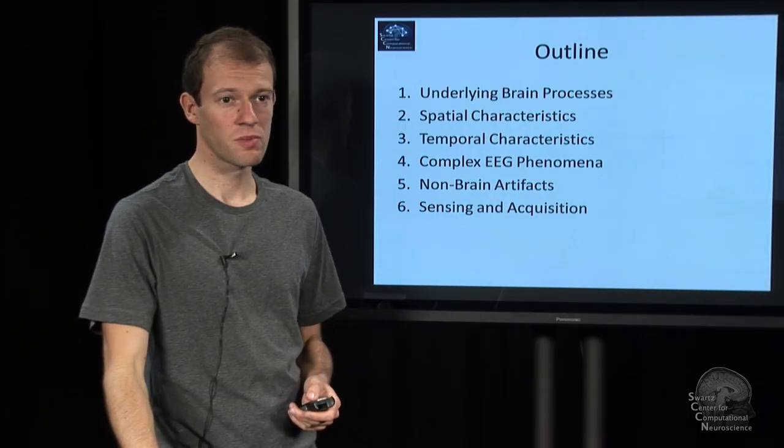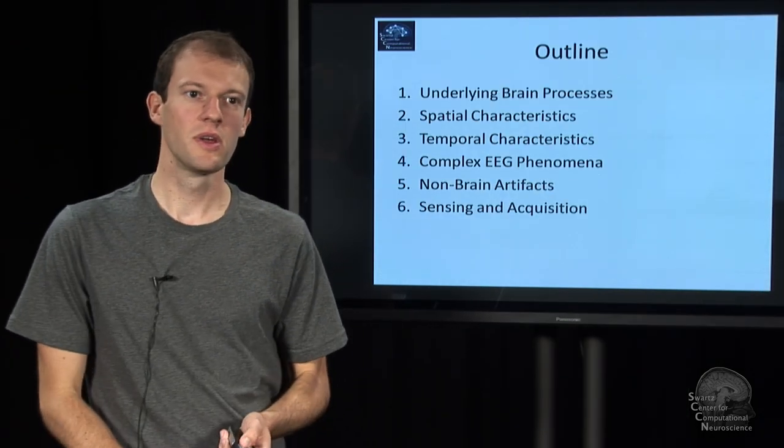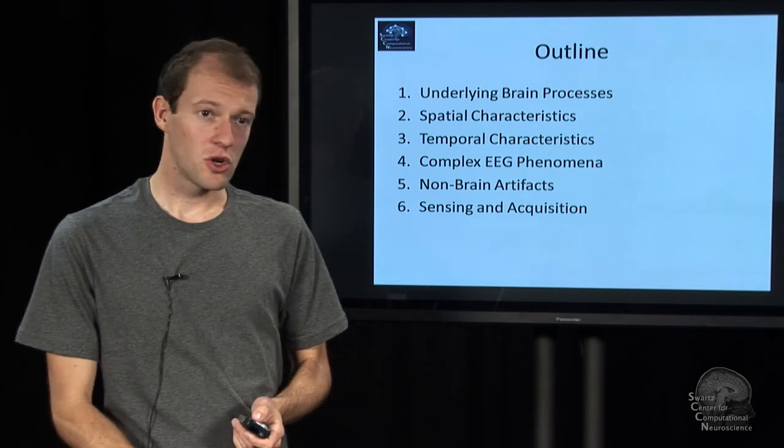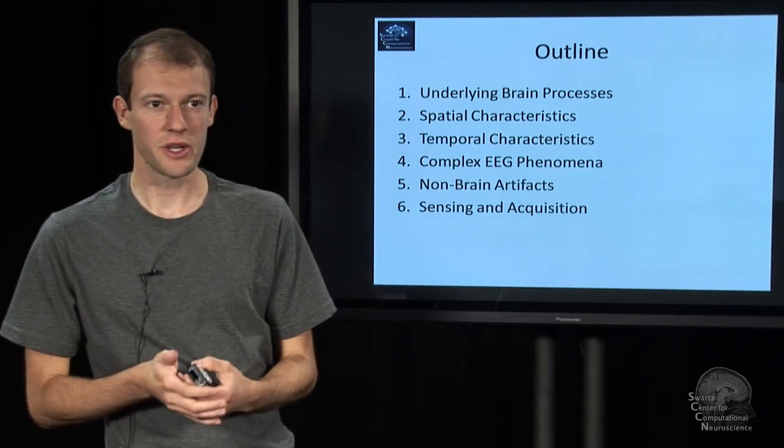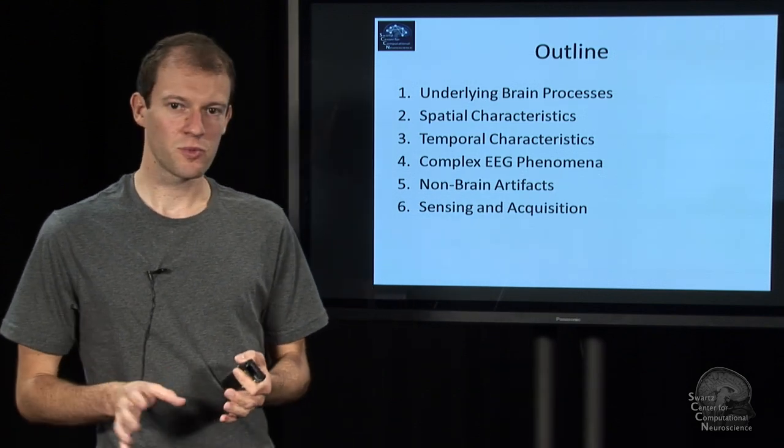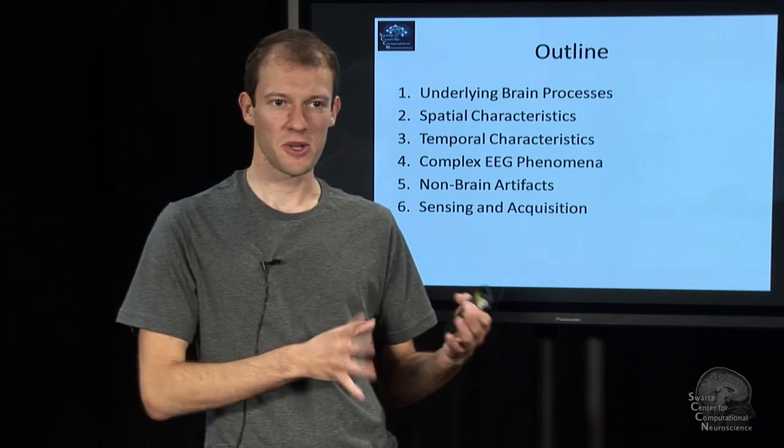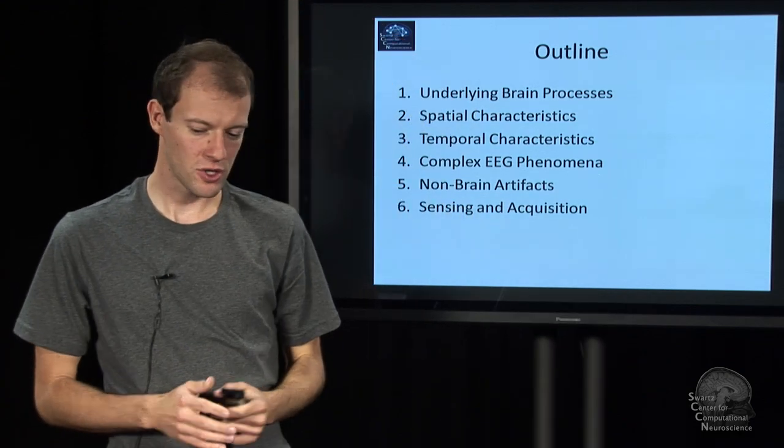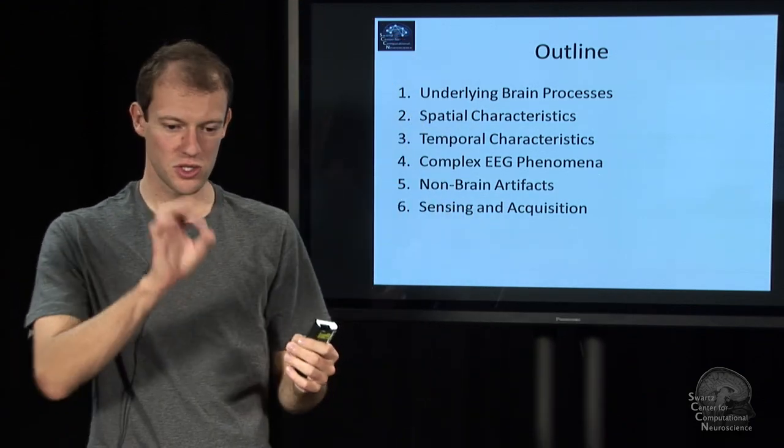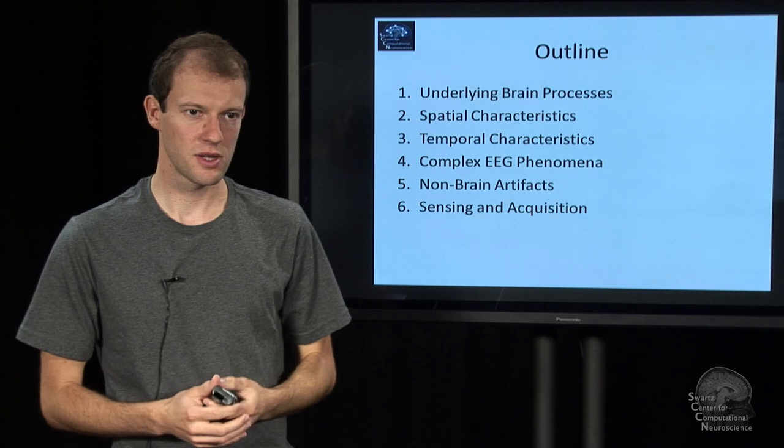There's six modules, some of them are rather short. We'll start with a discussion of the underlying brain processes that give rise to EEG. And then we'll talk about the characteristics of these brain processes in space, spatial characteristics. So space means brain space. And then we'll talk about the characteristics in time, like the rate of change and things like that.